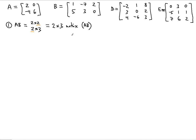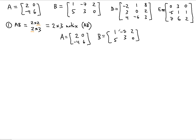Let me write A: 2, 0, -4, 6. And B: 1, 5, -7, 3, 2, 0. The resulting matrix AB is going to be this 2 by 3 size we just determined. The first entry we're going to find pertains to the position of the first row and the first column.